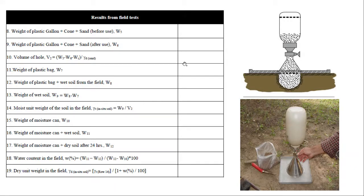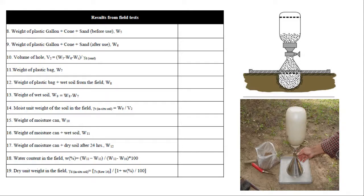Once we know the weight of the removed soil and the volume of the hole, the moist unit weight is simply weight divided by volume. Using the moisture content already determined, we can calculate the dry density of the in-situ soil. We then compare this dry density with the result from the standard proctor test to determine the relative compaction of the soil.